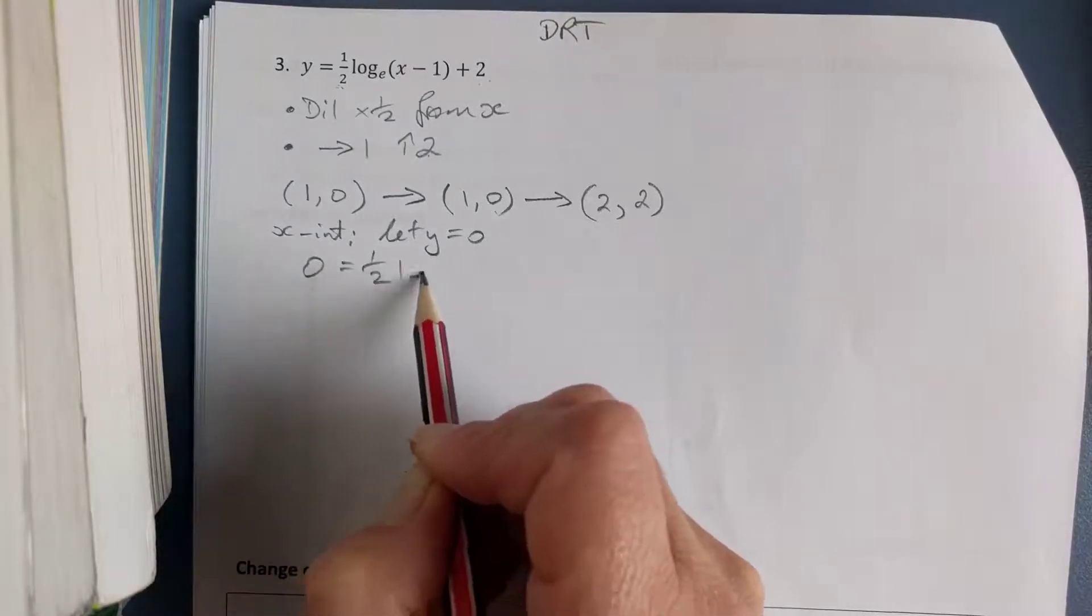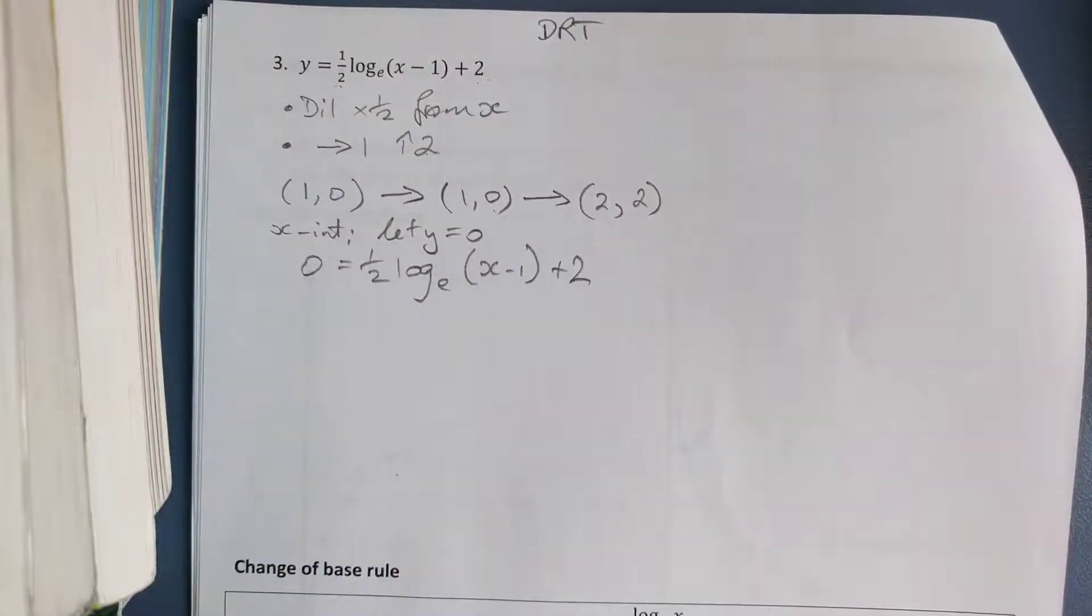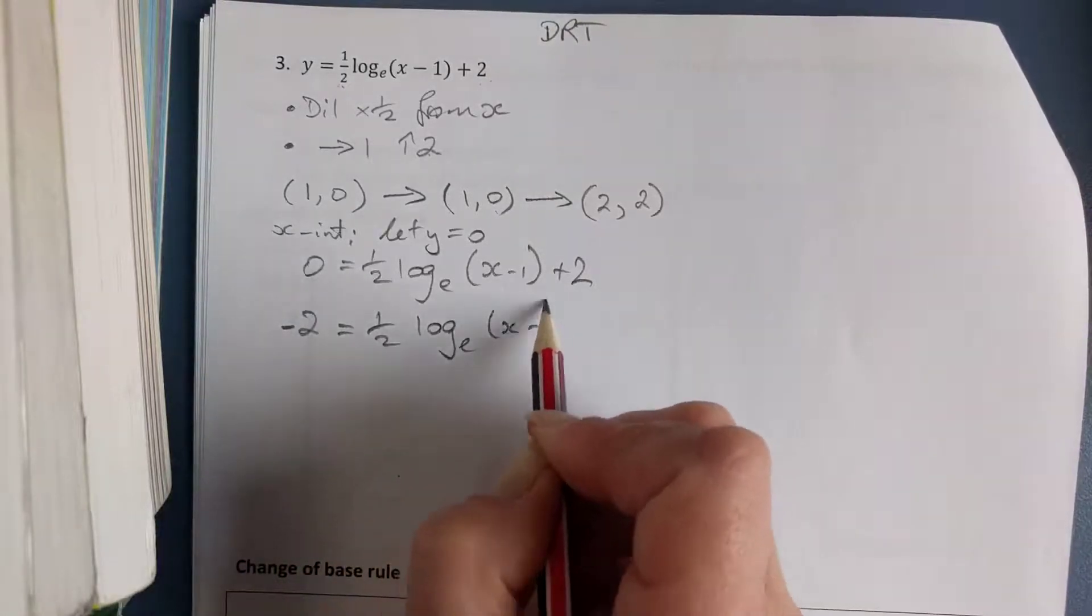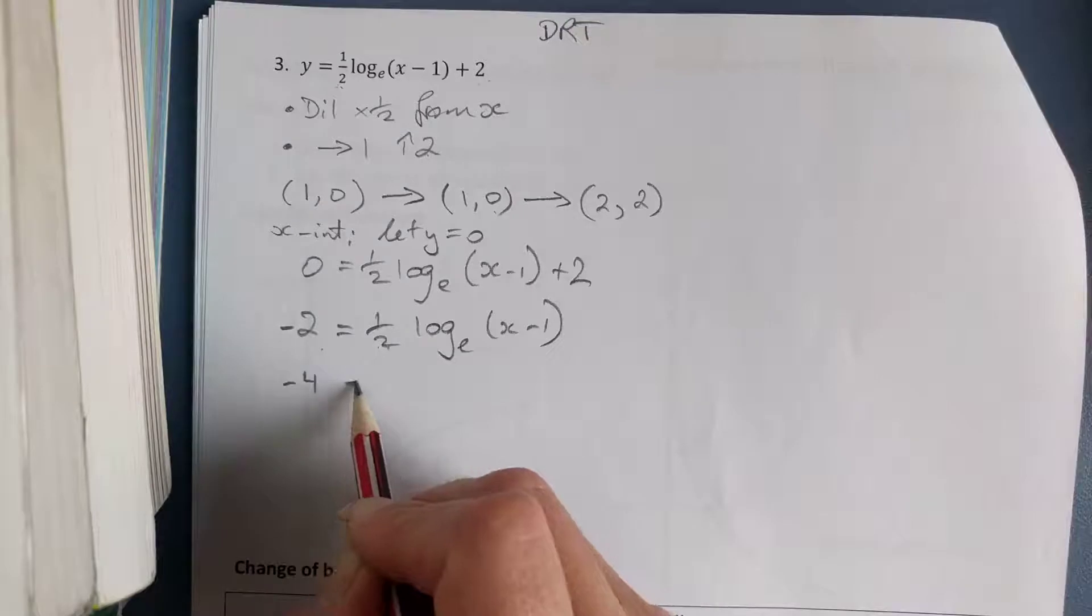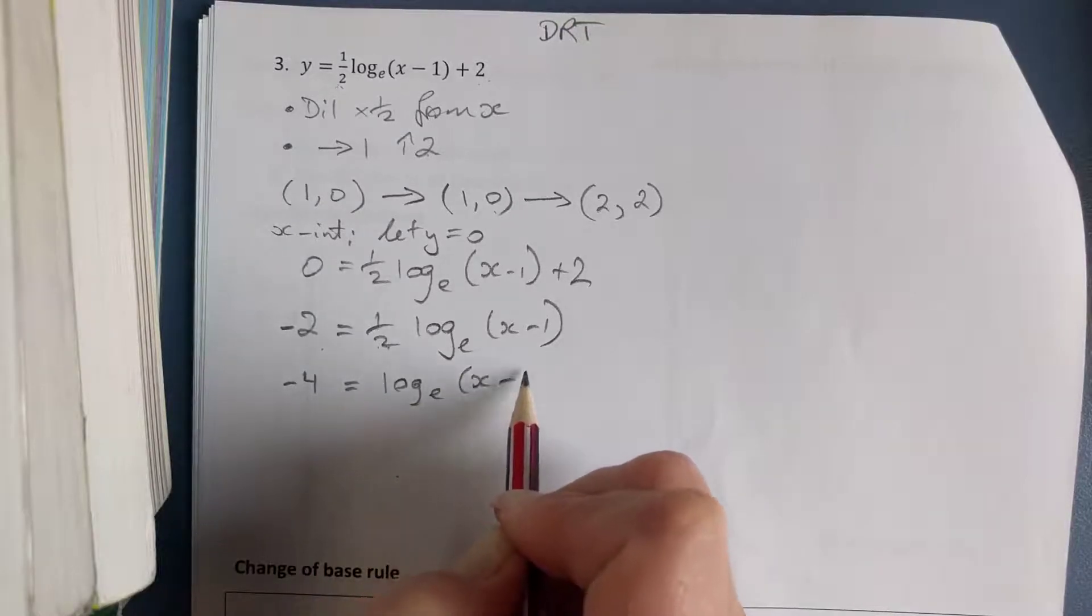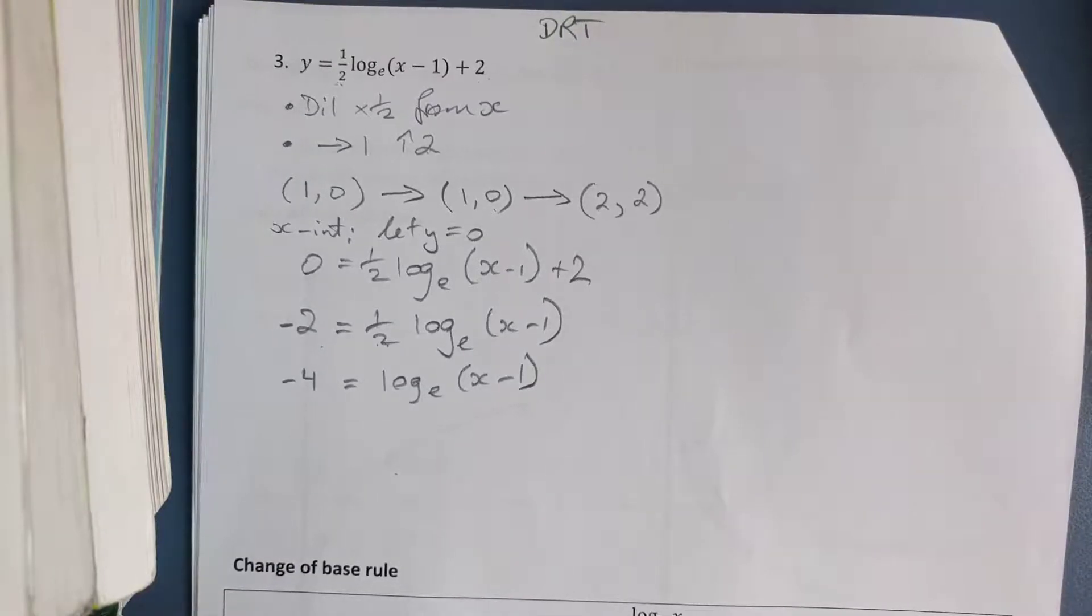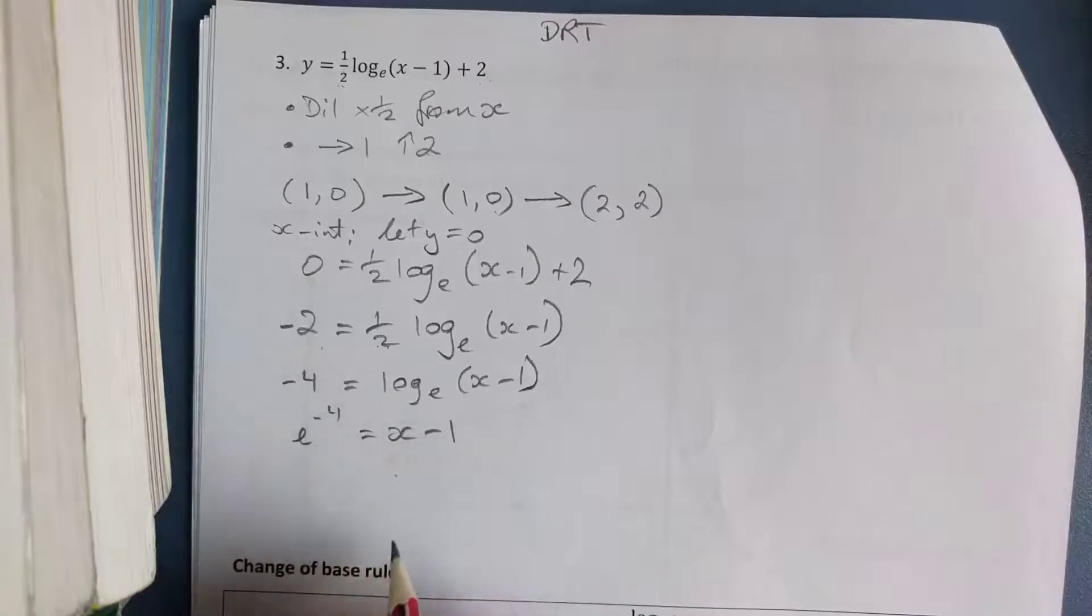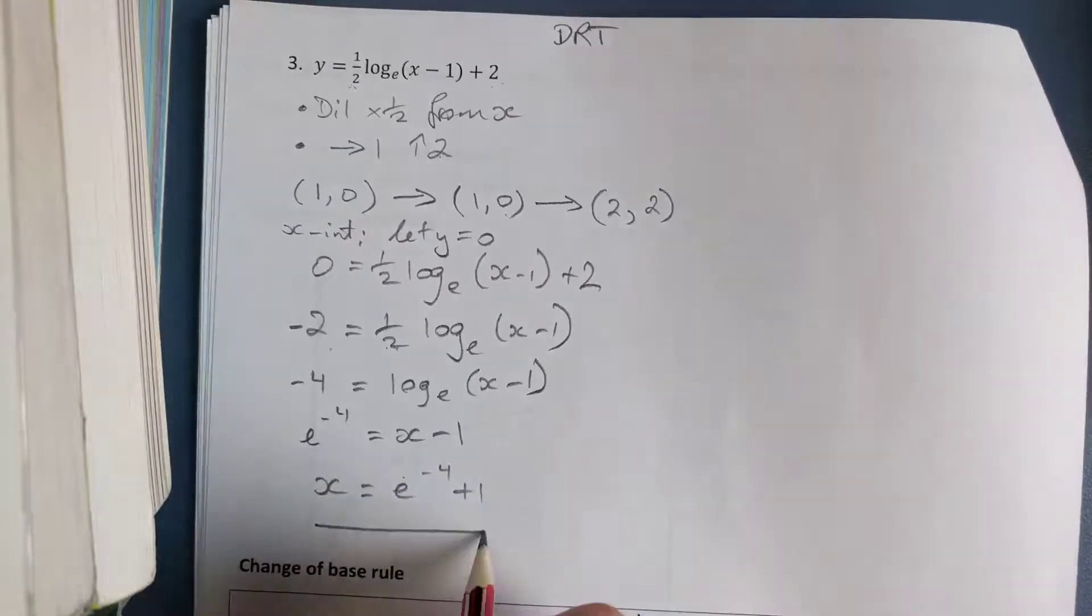So I've got 0 equals 1 half log base e of x minus 1 plus 2. Now I just need to rearrange this equation. So first I move the 2, and then I'm going to multiply both sides by 2 to get rid of this half here. So I have negative 4 equals log base e of x minus 1. Now I'm going to change my logarithmic equation into an exponential, so I'm going to raise both sides to a base of e. So I have e to the power of negative 4 equals x minus 1, and that leads me to x equals e to the power of negative 4 plus 1. And we're done.